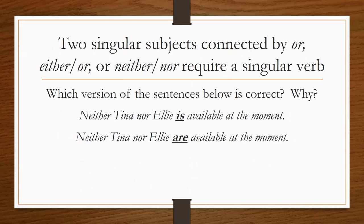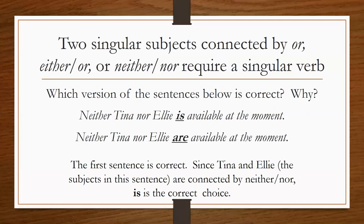When two singular subjects are connected by 'either/or' or 'neither/nor,' they still require a singular verb. For example: 'Neither Tina nor Ellie is available at the moment' is correct. 'Neither Tina nor Ellie are available at the moment' is incorrect. Because these subjects are connected by 'neither/nor,' the singular verb 'is' is the correct choice.